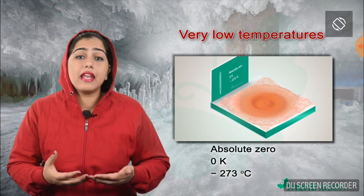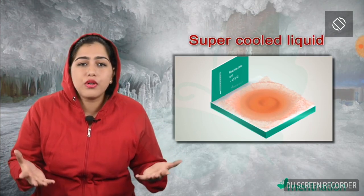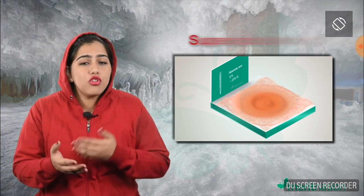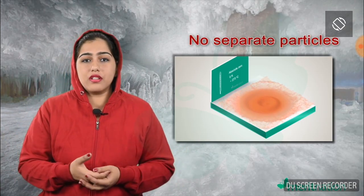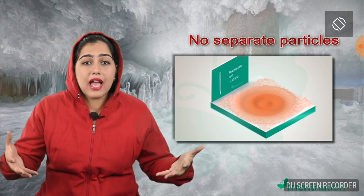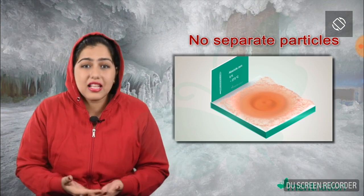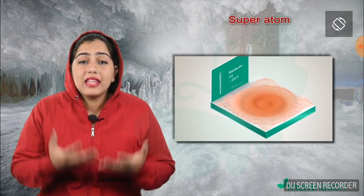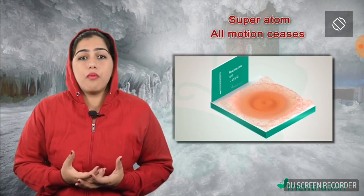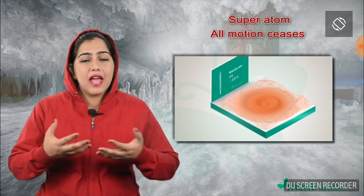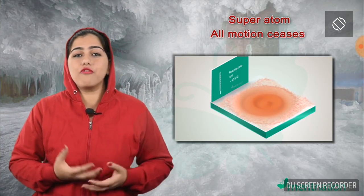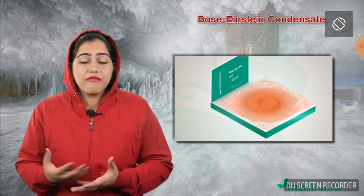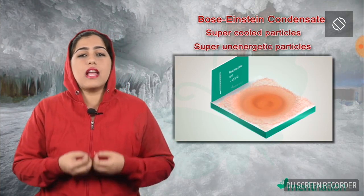At these low temperatures, the gas particles condense into a cluster and tend to remain in a supercooled liquid state. Since they are losing energy, they do not behave like separate gas particles but diffuse and condense together to form a cluster, behaving like one super atom. The motion in the particles ceases, giving us the new state of matter known as the Bose-Einstein condensate.